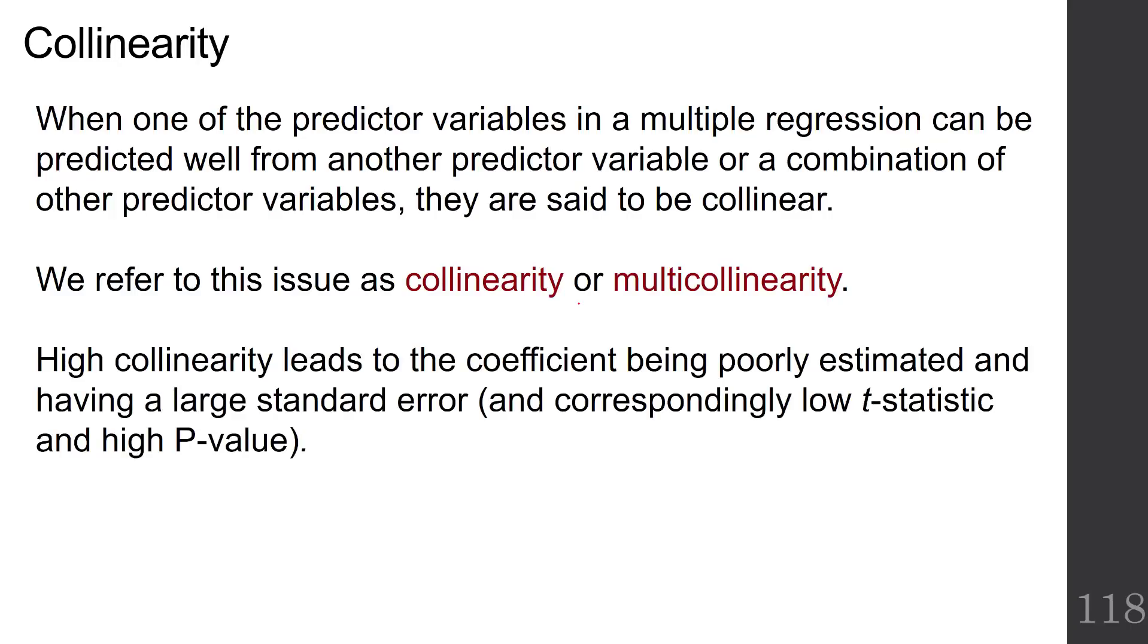High collinearity leads to the coefficient being poorly estimated and having a large standard error and correspondingly low t-statistic and high p-value. So it can make it look not significant in the presence of the other terms in the model. And the coefficient may seem to be the wrong size or even the wrong sign, like we saw in the bedrooms and living area example.